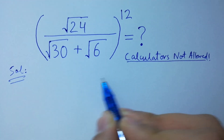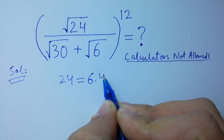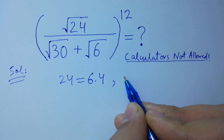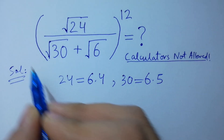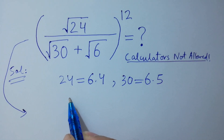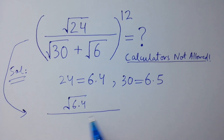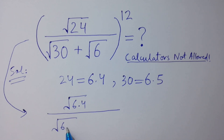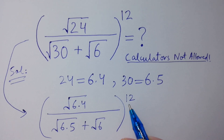Since 24 equals 6 times 4 and 30 equals 6 times 5, it will be equal to square root of 6 times 4, over square root of 6 times 5 plus square root of 6, to the whole power 12.